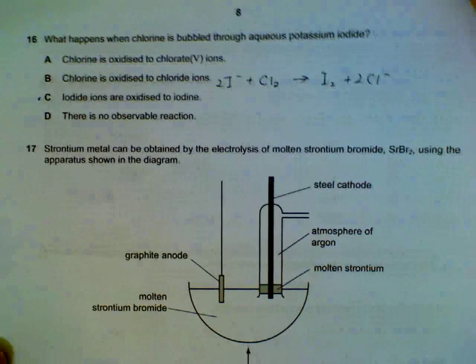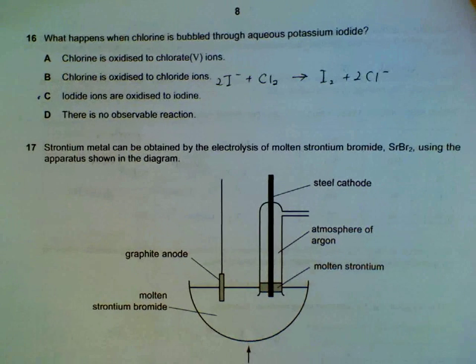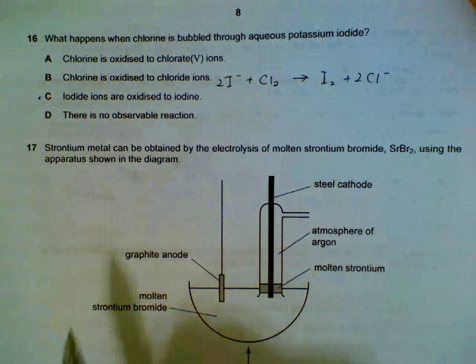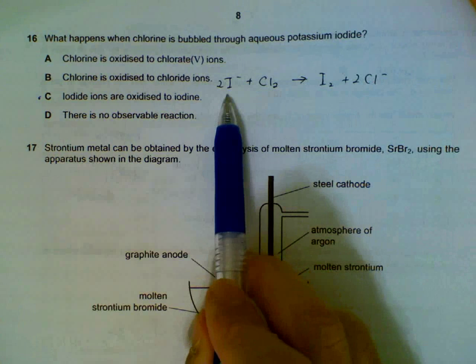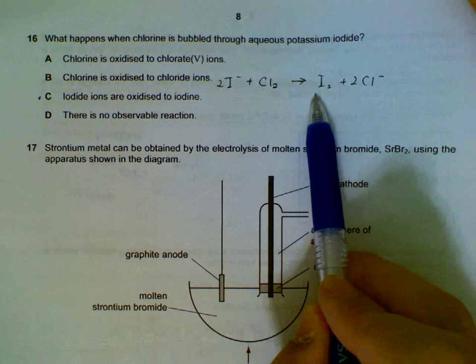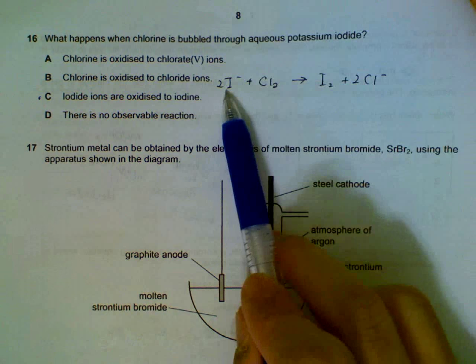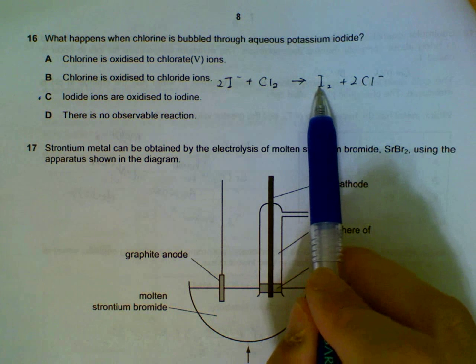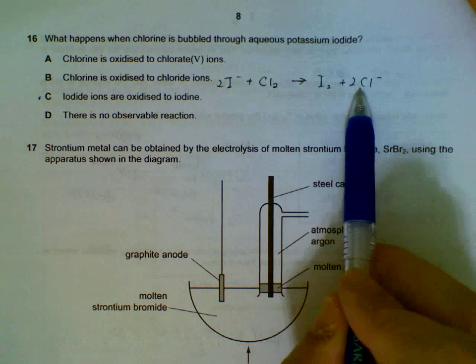16, chlorine reacting with potassium iodide. Chlorine is more reactive halogen than iodine, so it will be able to displace iodide. We will form chloride ions and iodine element, I2, so iodide is oxidized to iodine, chlorine is reduced to chloride.